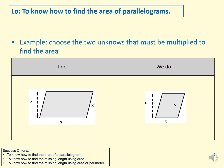Let's start finding the area of a parallelogram, but before that we need to know what a parallelogram is. This shape is called a parallelogram because this length is equal to and parallel to the opposite length. This length is also parallel to and equal to the other. You have two sets of parallel lines, which is why we call this shape a parallelogram.